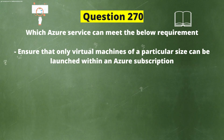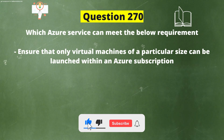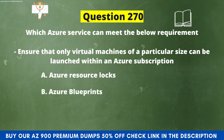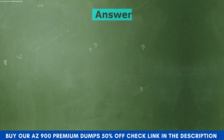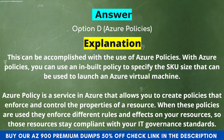Which Azure service can meet the below requirement: ensure that only virtual machines of a particular size can be launched within an Azure subscription? Option A, Azure Resource Logs. Option B, Azure Blueprints. Option C, Azure Resource Tags. Option D, Azure Policies. And the correct answer is Option D, Azure Policies. This can be accomplished with the use of Azure Policies. You can use an inbuilt policy to specify the SKU size that can be used to launch an Azure virtual machine. Azure Policy is a service in Azure that allows you to create policies that enforce and control the properties of a resource, ensuring resources stay compliant with your IT governance standards.